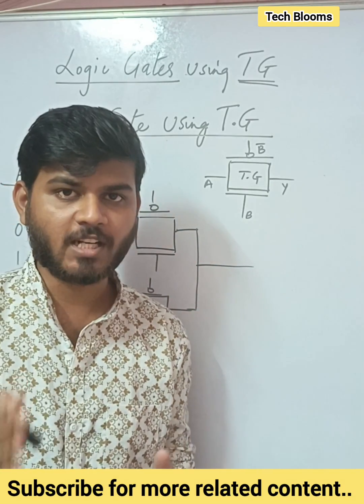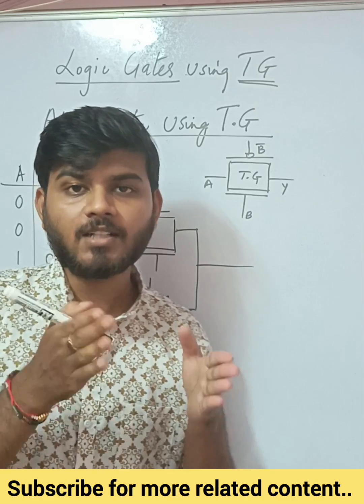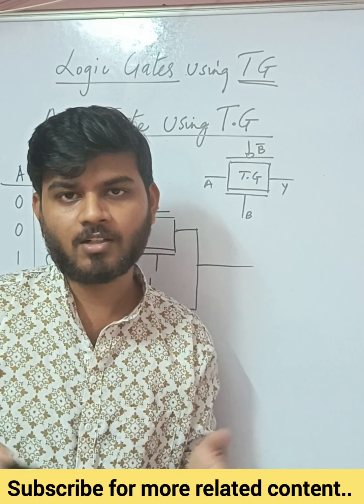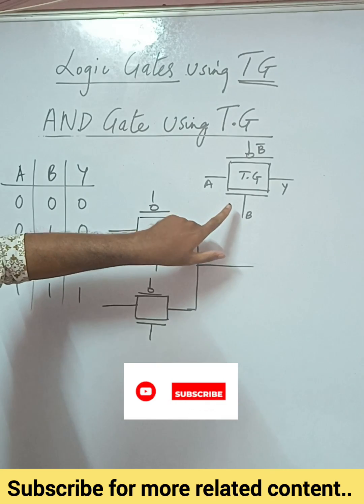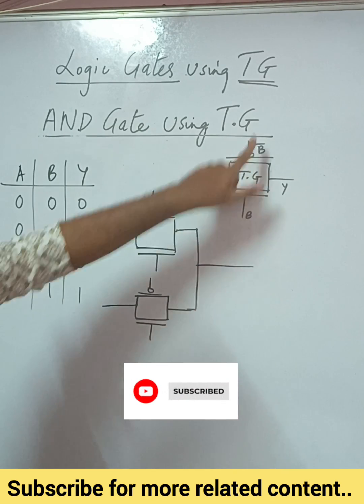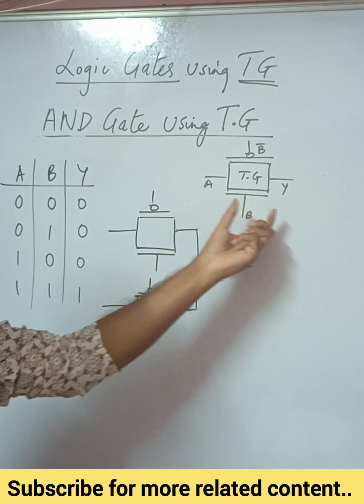In our previous video we have seen what is the transmission gate. In this video we are going to see how to use the transmission gate to construct an AND gate. So basically here we have the logic diagram of a transmission gate. You can see here we have the control signal b which will be used to activate the transmission gate, and you have a and y as the input and output respectively.